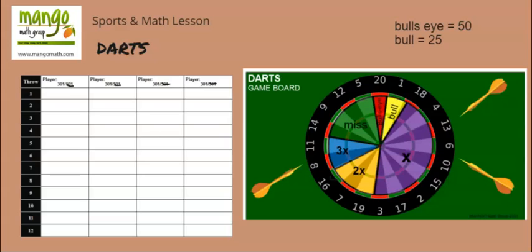Let's say the first spin lands on times three. The second spin lands on six, so you do six times three, which equals 18. Students can write this on the back of the sheet if they need a place to work out the numbers — that's perfectly fine.